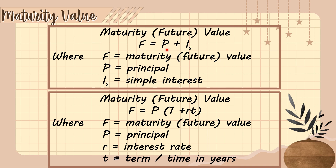This first formula is for method one. Now for method two, we have F is equal to P times one plus rate times time, where F is the maturity or future value, P is the principal, R is the interest rate, and T is the term or time in years.